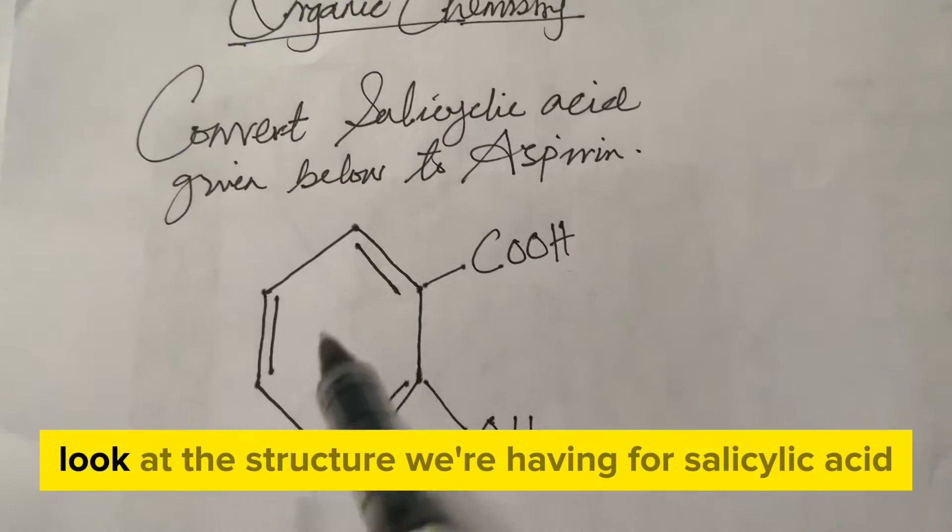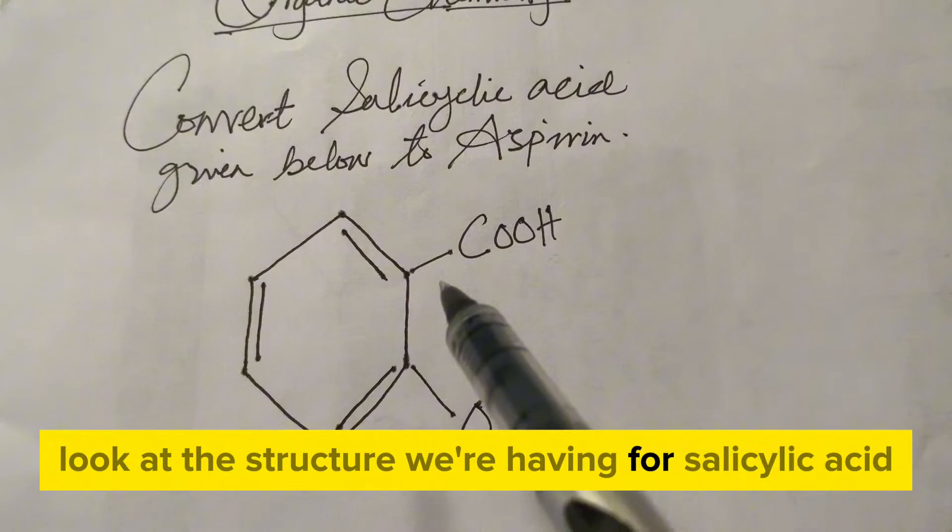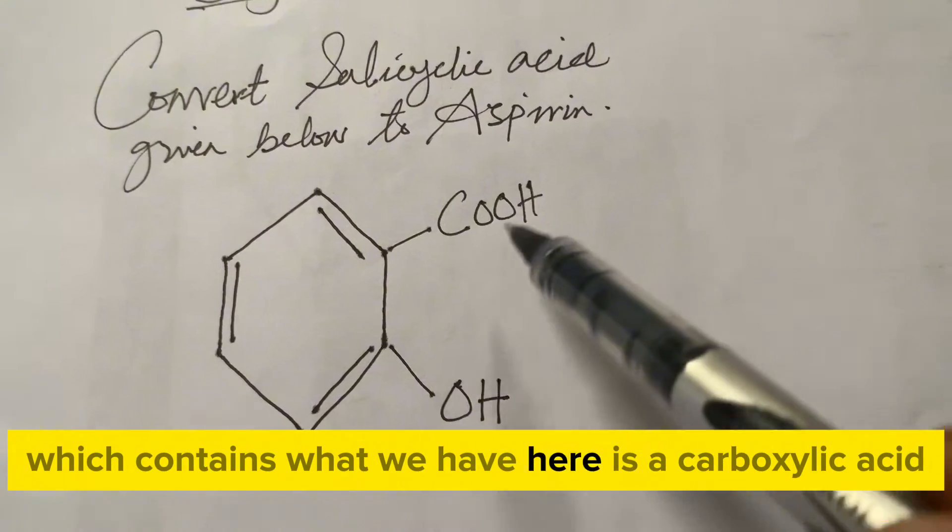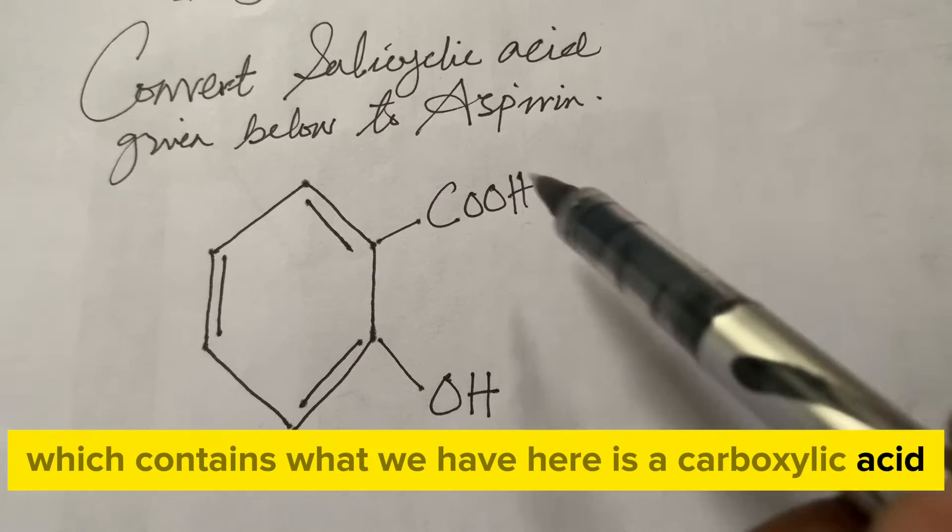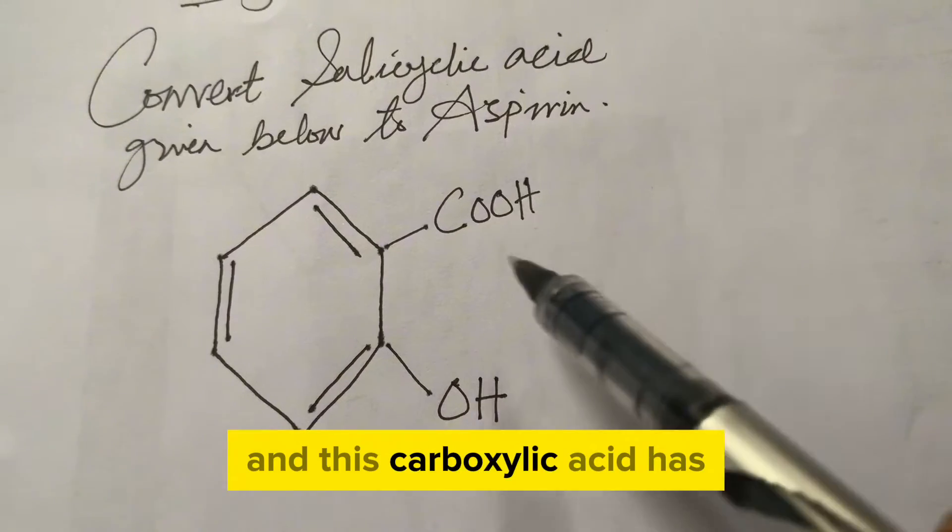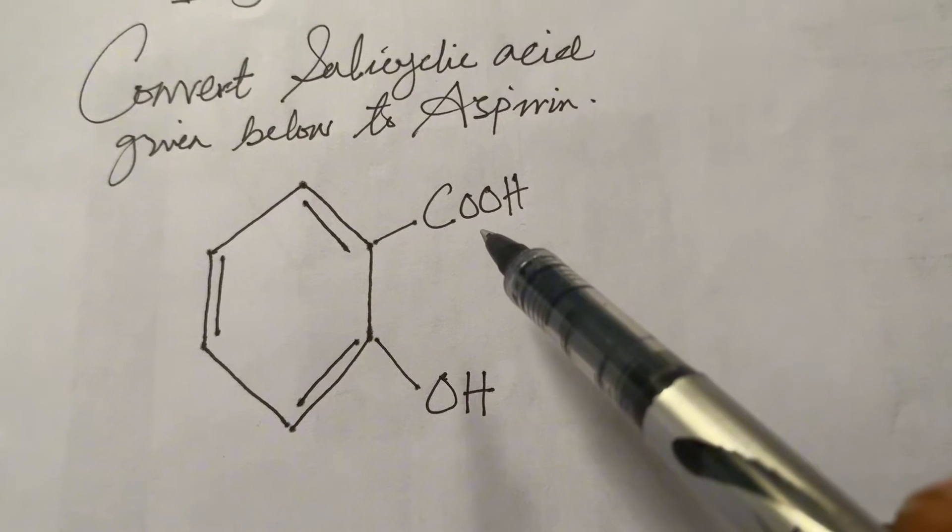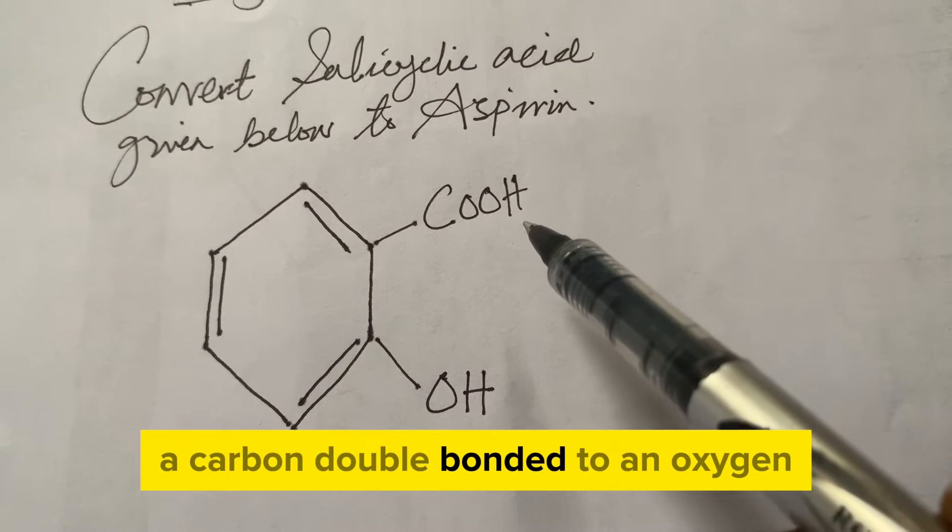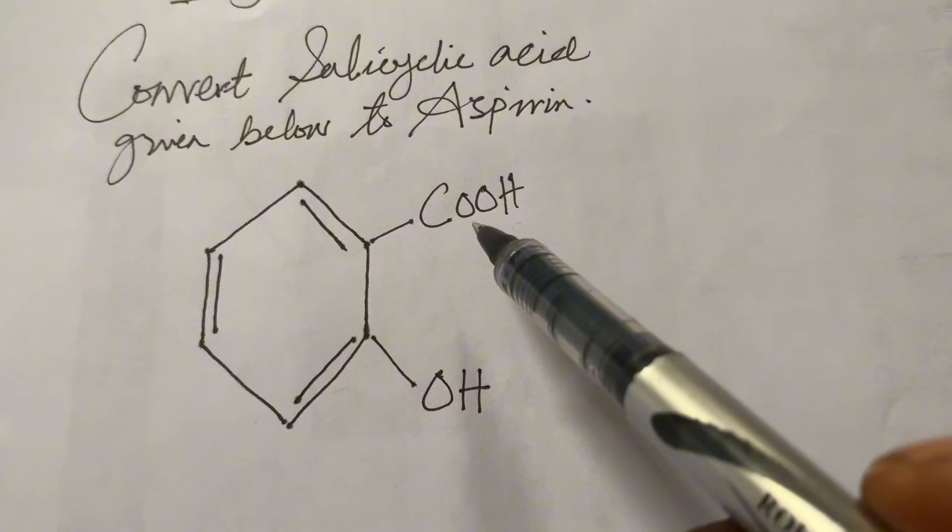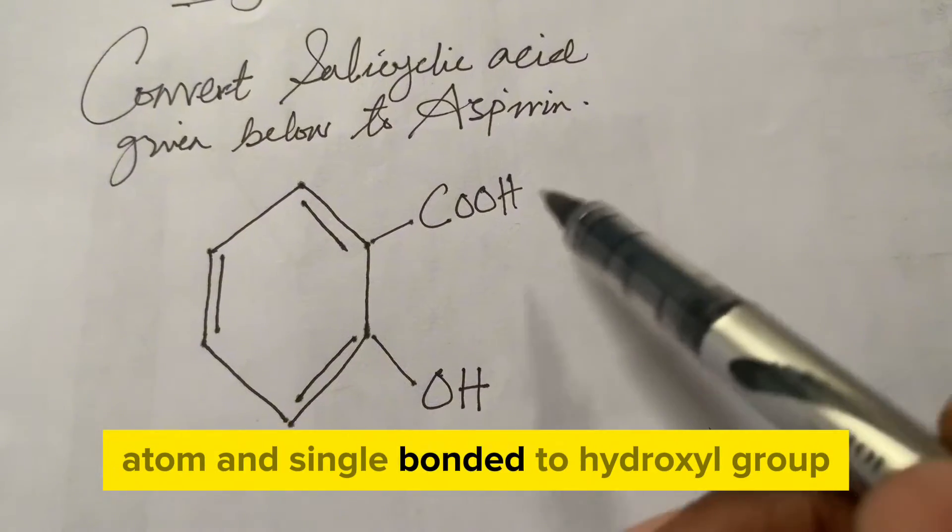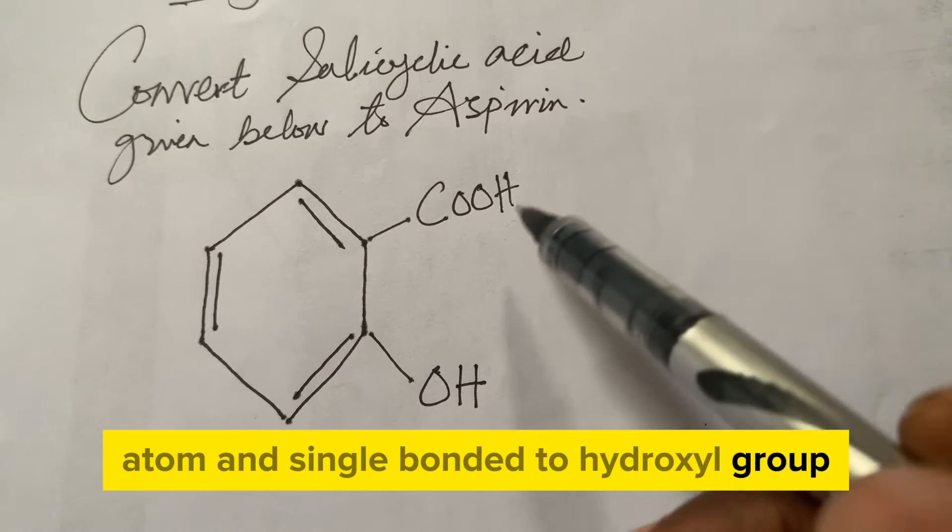Having understood these basics, look at the structure we're having for salicylic acid. What we have here is the carboxylic acid, and this carboxylic acid has a carbon double bonded to an oxygen atom and single bonded to a hydroxy group.